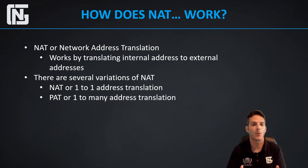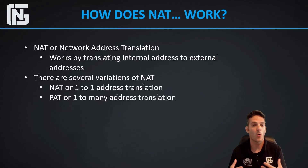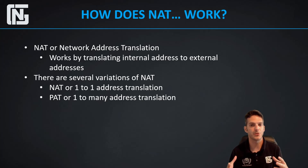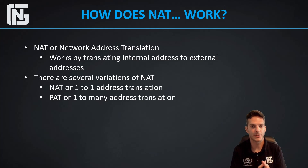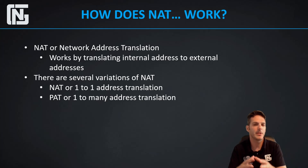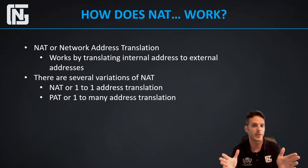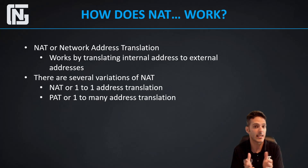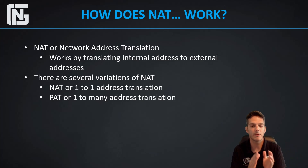The next variation is PAT, or Port Address Translation, which is one-to-many address translation. In a home network or a small-to-medium-sized business with a single internet connection, maybe you only have one public IP and you have multiple internal users. Those users need to access the internet, and the way they do that is by translating, for example, the 10.1.1.0/24 network into a public address range. The whole point is the public IP translates multiple internal addresses to a single IP, and everybody looks like they're coming from that single public IP going outbound to the internet.